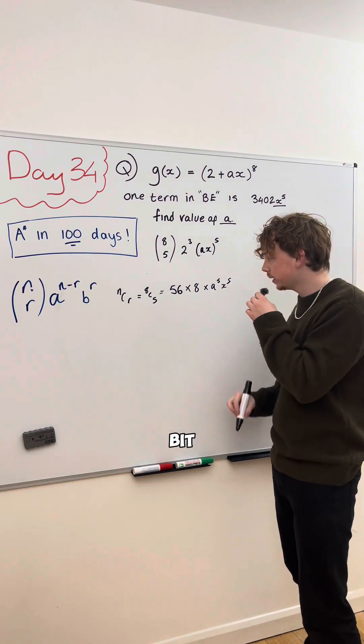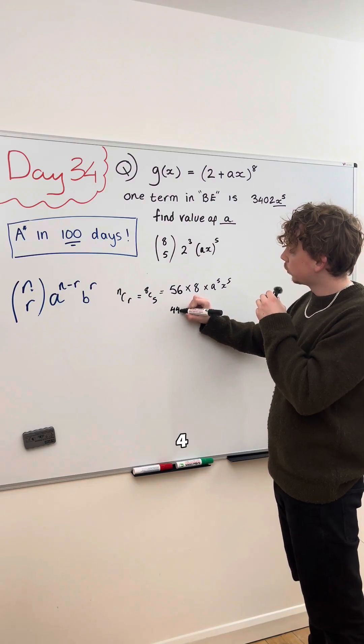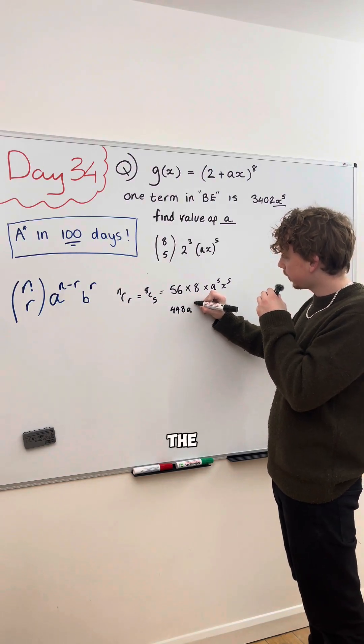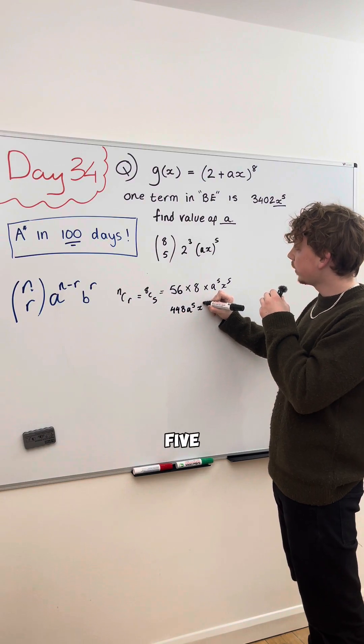Now, we can simplify this a little bit, giving us 448, A to the power of 5, x to the power of 5.